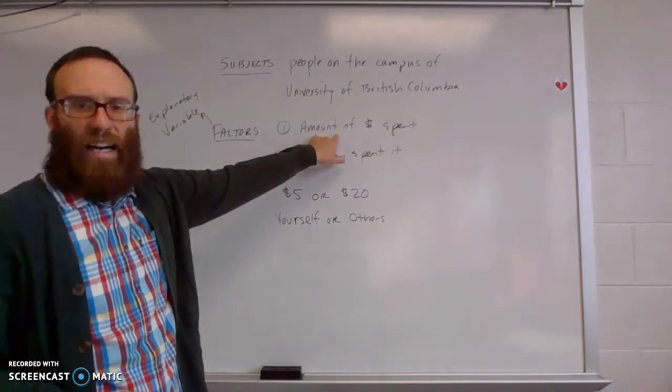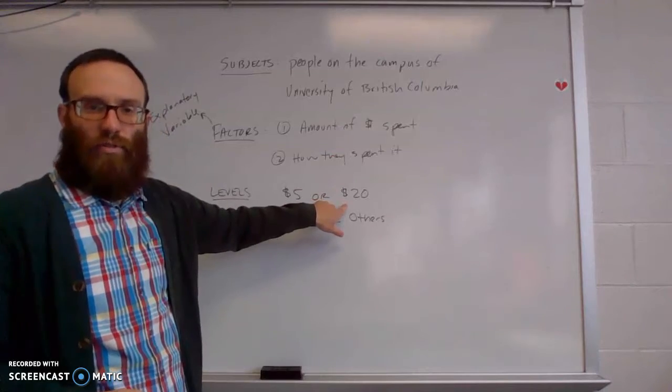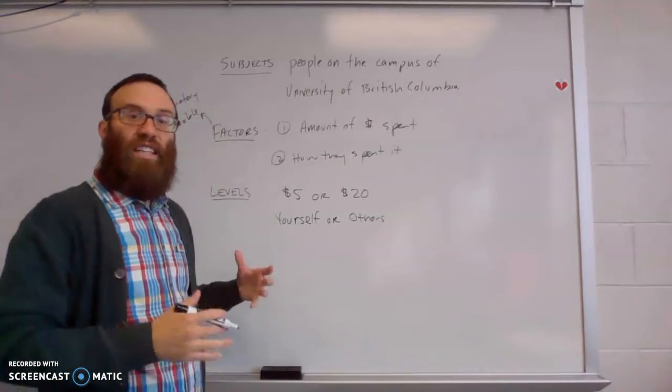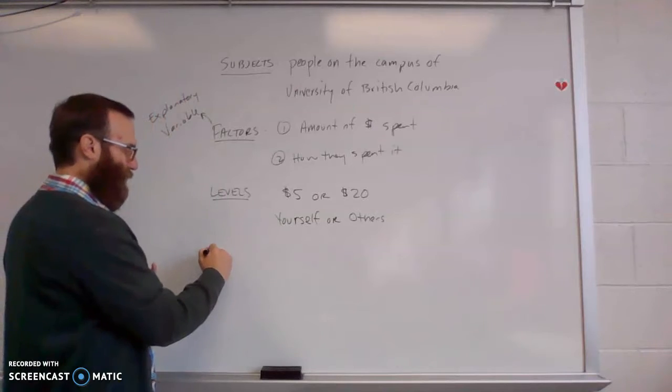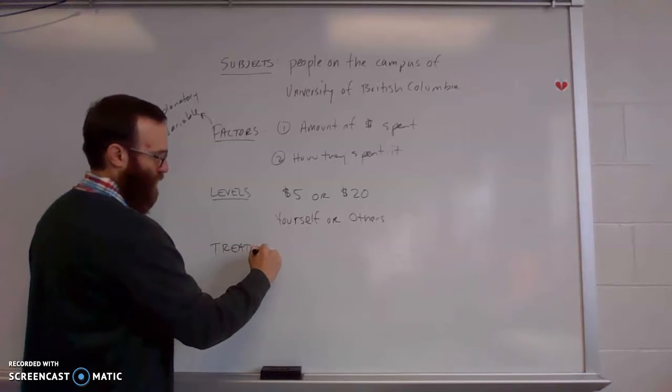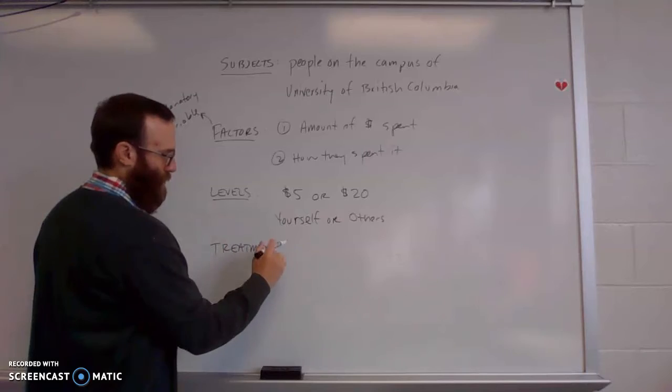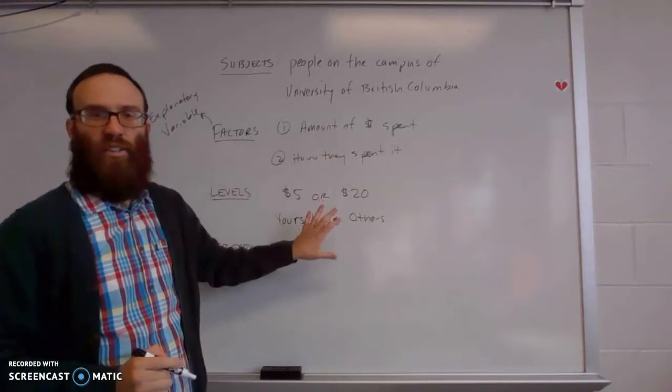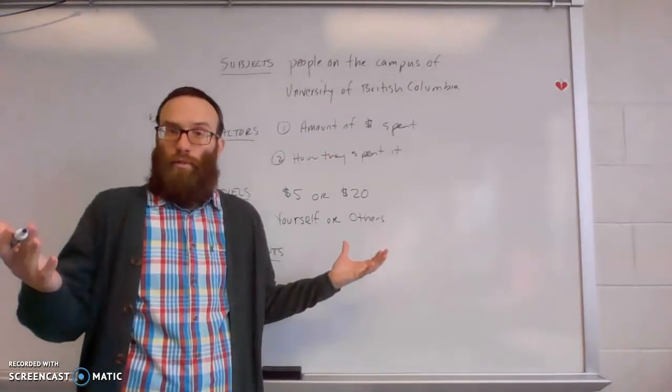And so each of our two factors has two levels. Some experiments will see more, some will have less. What that gives us though, in the end, is four treatment groups. And the reason it's four is I have two factors, two levels, two times two is four.